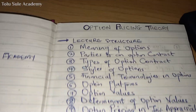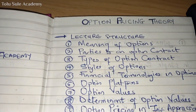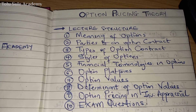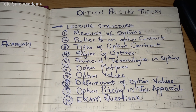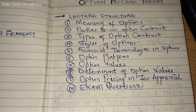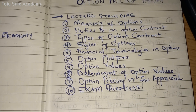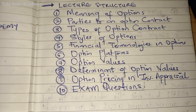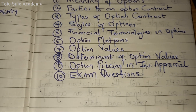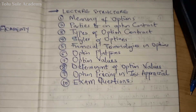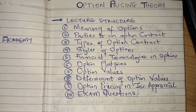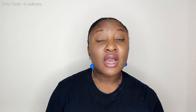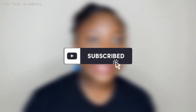We start with the lecture structure — from the meaning of option, to parties to an option, types of option contract, styles of option, financial terminologies and option, option platforms, option values, determinants of option values, option pricing and investment appraisal, and we'll solve exam questions.